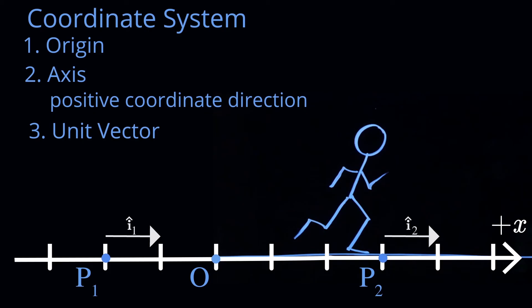So every single point in space has a unit vector. Now, what's unique about this one dimensional linear Cartesian coordinate system is the following. These unit vectors have the same magnitude. A unit vector, by definition, has magnitude 1.